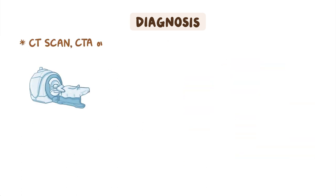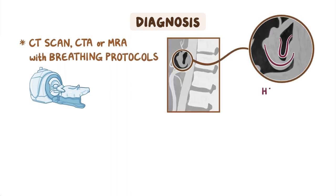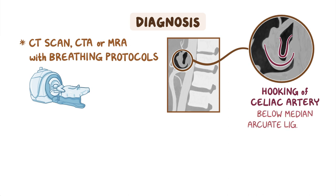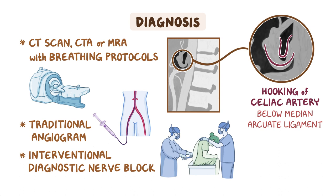Additionally, a CT scan, CTA, or MRA should be done with breathing protocols to look for the characteristic hooking of the celiac artery below the median arcuate ligament. In some patients, a traditional angiogram may be required. An interventional diagnostic nerve block may be suggested as well.